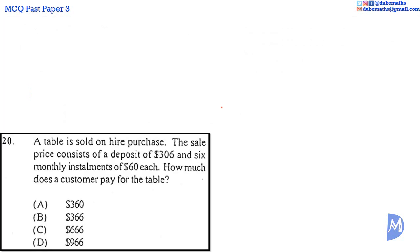Question 20. In this hire purchase agreement, you make a deposit of $306 and pay six monthly installments of $60 each. Therefore, the total monthly installments is equal to $60 by 6, which is equal to $360.